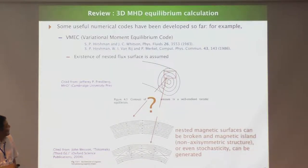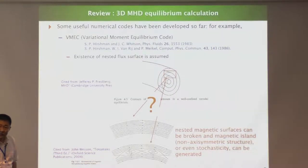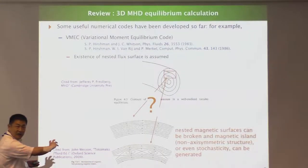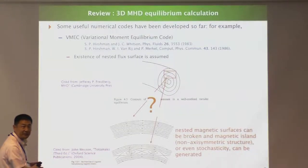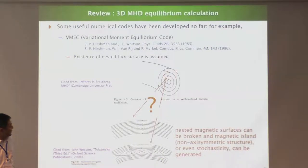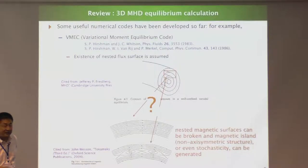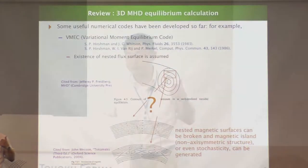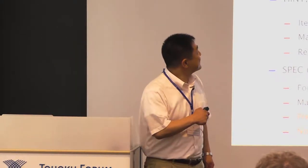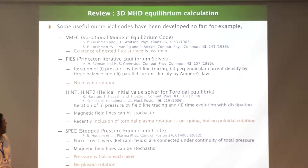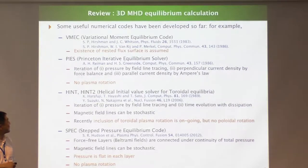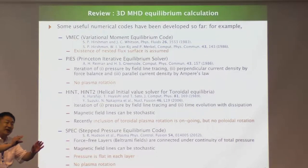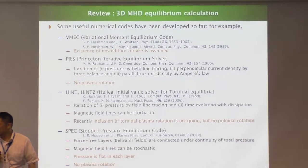If we follow the magnetic field lines, we may find island structures that rotate in the torus plasma — helical structures inside the plasma. Also, the magnetic field can be stochastic in this kind of system, but this code assumes the existence of nested flux surfaces, which is a big assumption. Other numerical codes also assume something: for example, no plasma rotation, or a flat pressure in each layer — somewhat unphysical assumptions. So there is no perfect code.